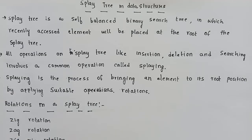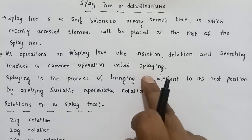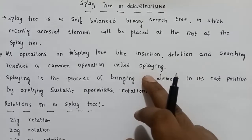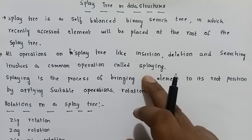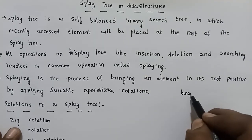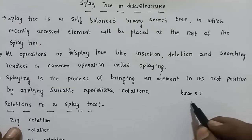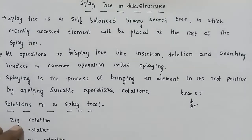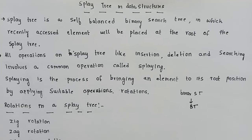A Splay Tree is a self-balancing binary search tree. A binary search tree is a type of binary tree where a node has a maximum of 2 children nodes.